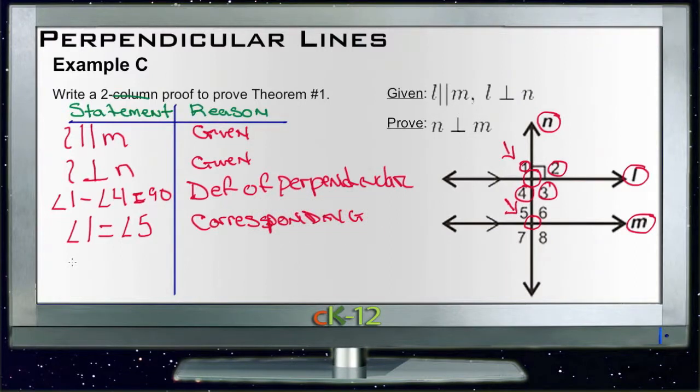And then if angle 5 is equal to angle 1, then angle 5 is also 90 degrees. We know that because we know it's equal to 1. And we'll call that transitive property of equality.